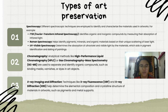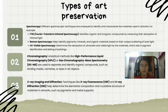Chromatography analytical methods like High Performance Liquid Chromatography or Gas Chromatography-Mass Spectrometry are used to separate and identify organic compounds such as binding media, varnishes, or dyes in art objects. X-ray imaging and diffraction techniques like X-ray fluorescence and X-ray diffraction help determine the elemental composition and crystalline structure of materials in artwork, such as pigments and metal supports.